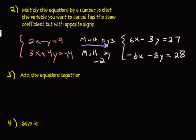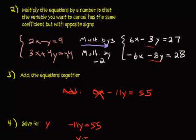Now it's time to add the equations together. When you add these two together, we get 6x minus 6x, that's 0x. Negative 3y and negative 8y will make negative 11y. And 27 and 28 will make 55. Now we're going to solve for y because 0x is just 0, so that goes away. We get negative 11y equals 55, so y has to equal negative 5.